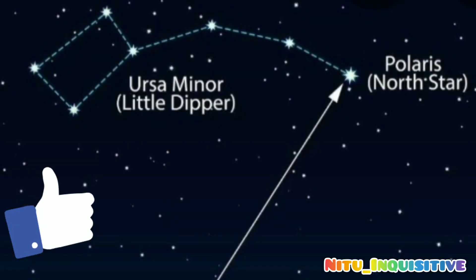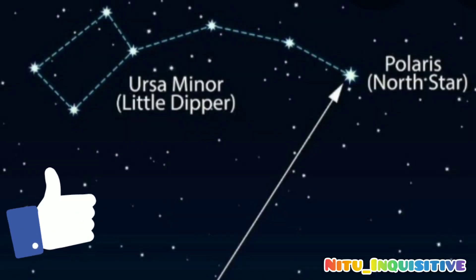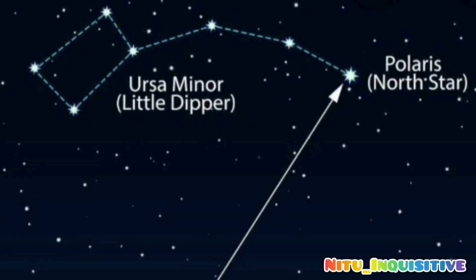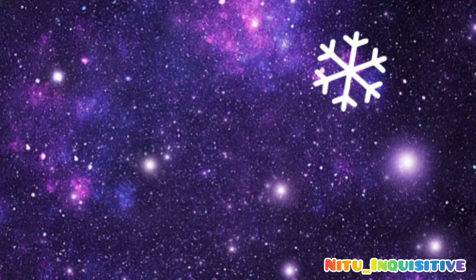One very important point in this topic is that Ursa Minor contains a very important star of average brightness which is known as Polestar.